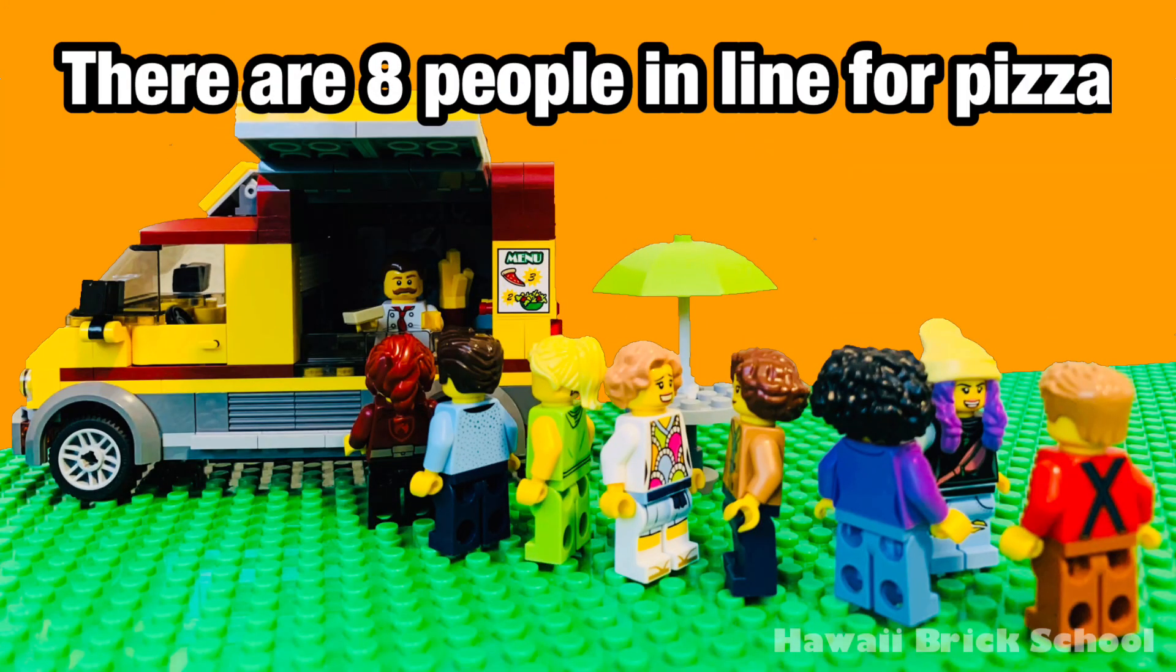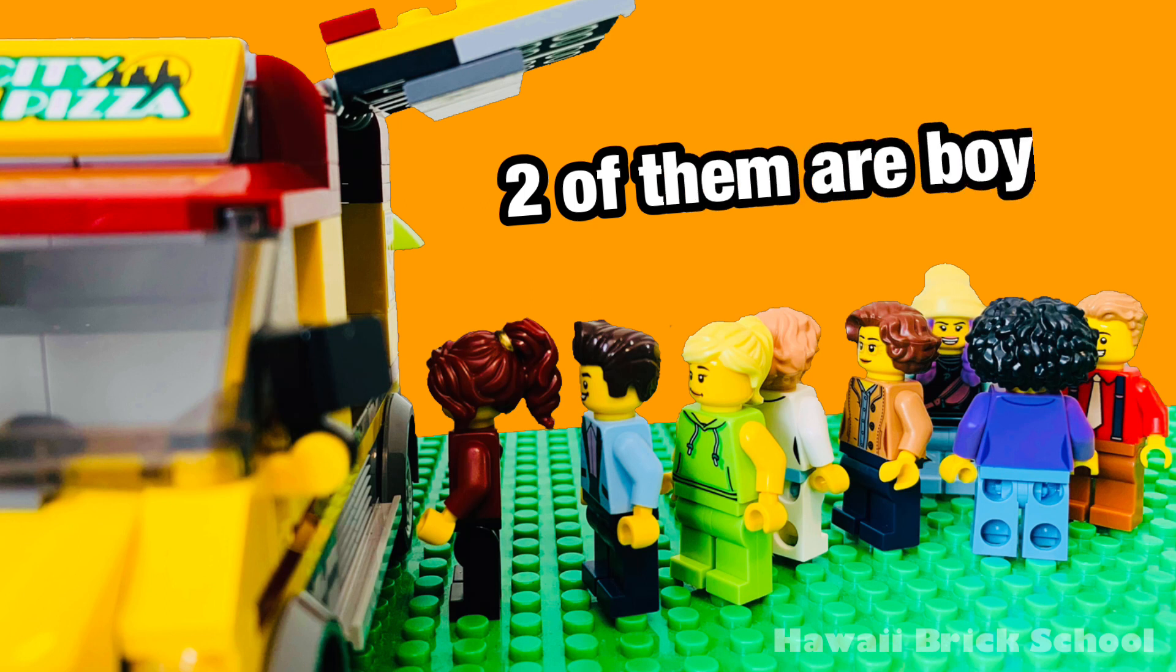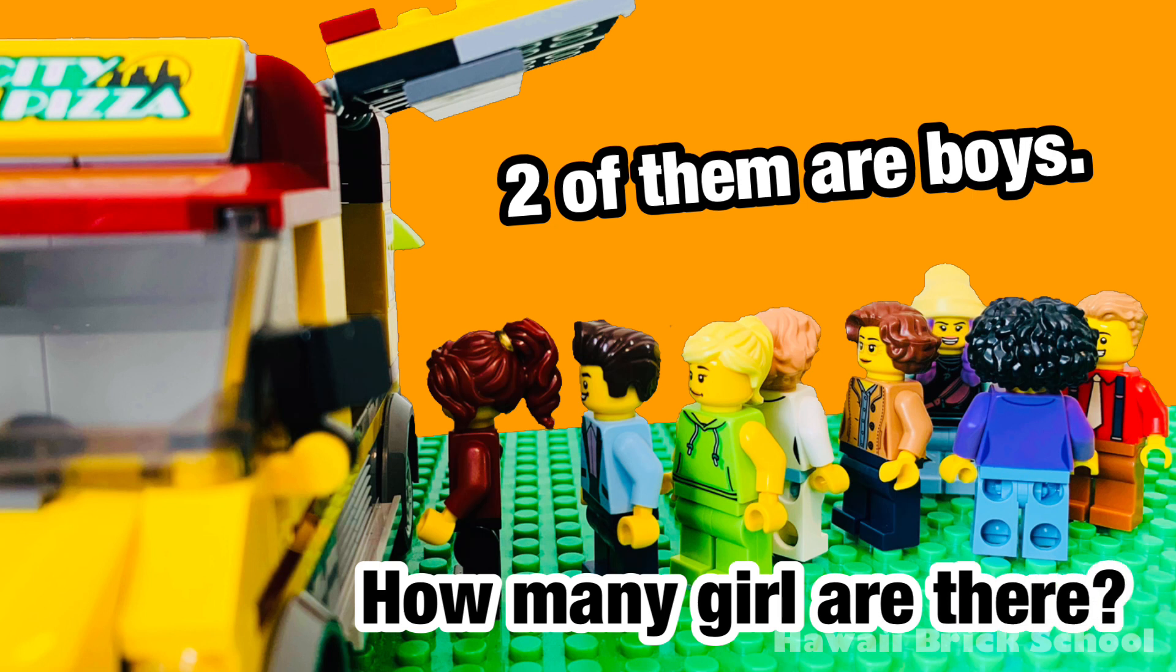There are 8 people in line for pizza. Two of them are boys. How many girls are there?